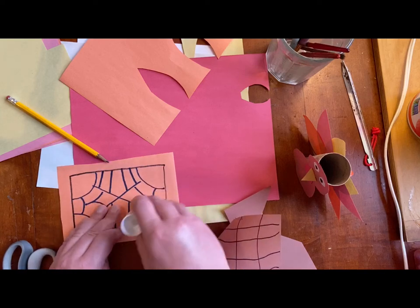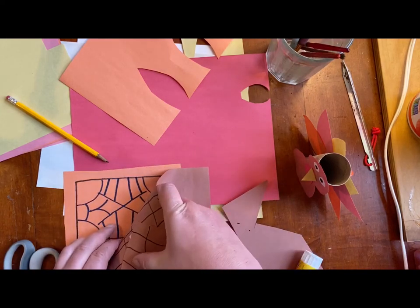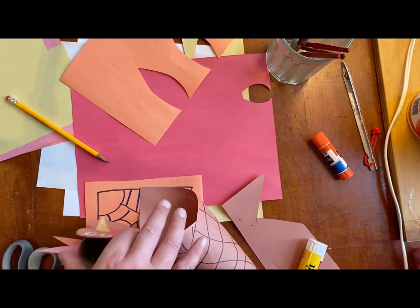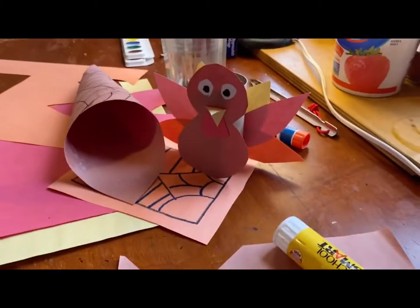After I have my place mat done, I'm going to put some glue down on it and glue down my horn of plenty on top. I am also going to save room on my place mat so it has room for my turkey right next to my horn of plenty.